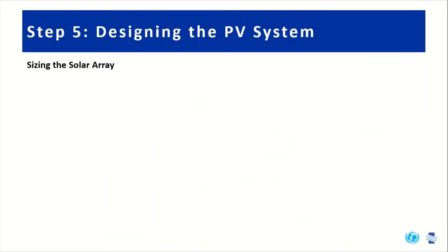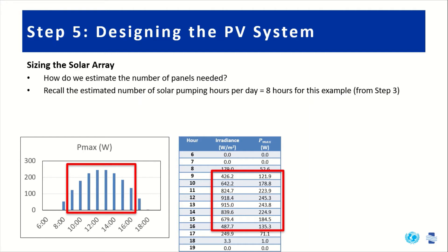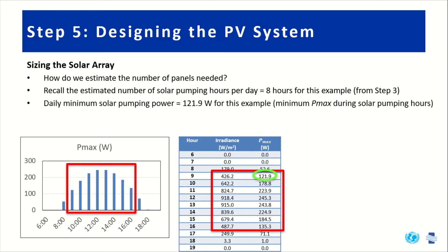Now that we've determined the power output from a single solar panel, we can ask: how do we estimate the number of panels needed? We chose to use eight hours per day of solar pumping as an approximation. The chart on the bottom left shows Pmax in watts varying throughout each hour of the day, and the chart in the middle shows irradiance and Pmax values. The red squares highlight those peak eight hours, and we find the minimum Pmax within those eight hours.